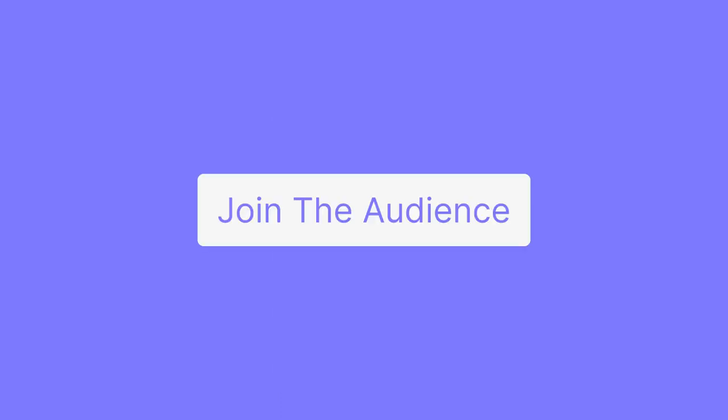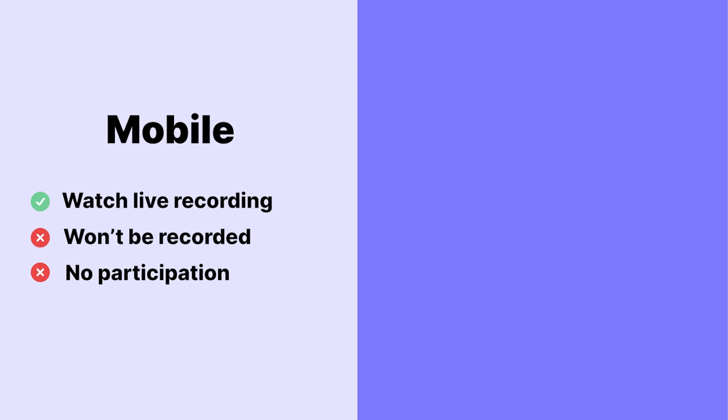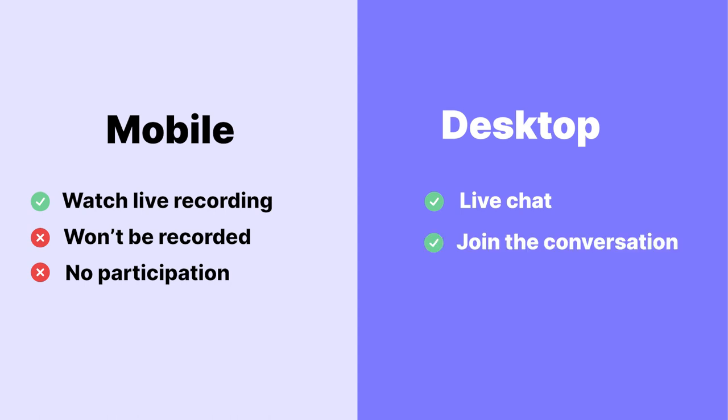Our mobile app also allows others to join the studio as an audience member. By joining as an audience member on mobile, it means that that person can watch the recording process, but they won't be recorded or able to participate in any way. By joining as an audience member on desktop, they can chat in to ask questions and even request a live call-in to join the conversation.